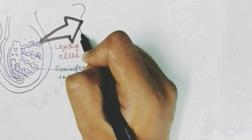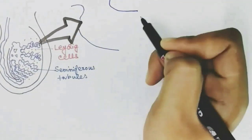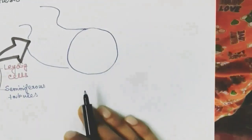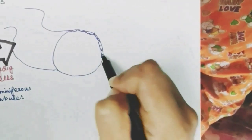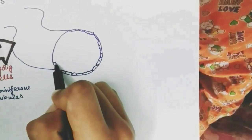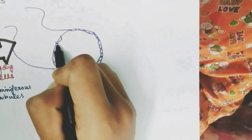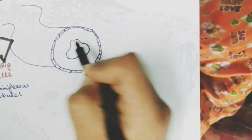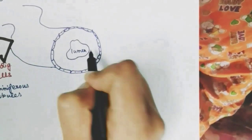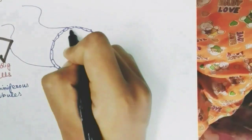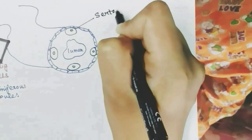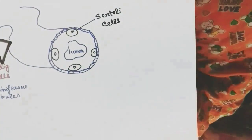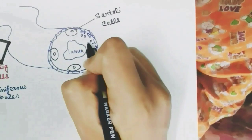Sperms are produced inside the seminiferous tubules, so let us zoom into the seminiferous tubule to see the location of sperm production. The seminiferous tubule is made up of a wall and a lumen. In the wall, some special cells called Sertoli cells are present.